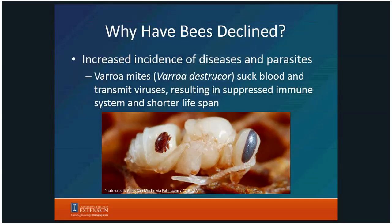The varroa mite is one factor. There are also tracheal mites, but our American honeybee populations have developed some resistance to those since they were introduced not too many years back. With a suppressed immune system and virus transmission, there are about six to eight viruses of major concern to our honeybee population — they cause paralysis, wing problems, and a lot of other issues. So varroa mites don't help when there are things in the ecosystem making honeybees sick.